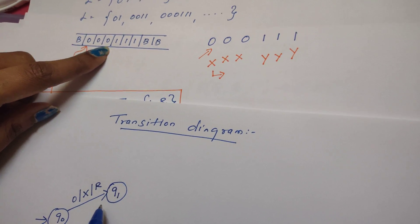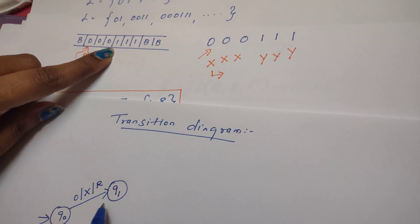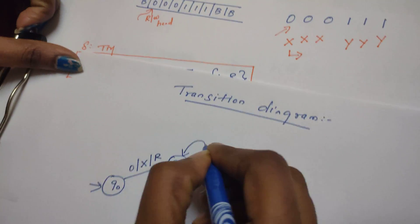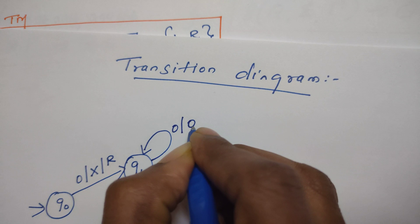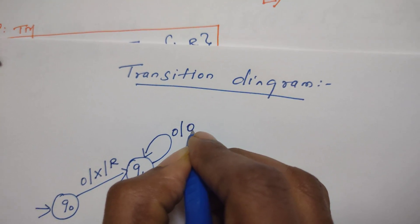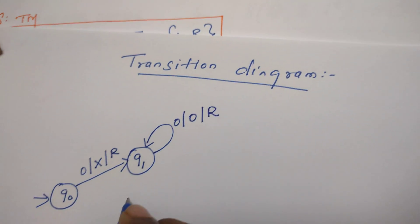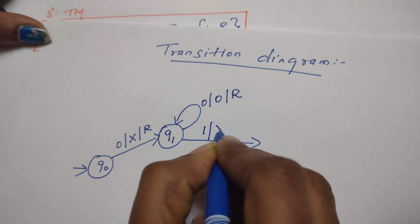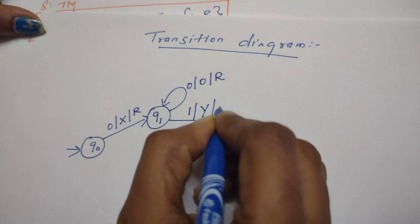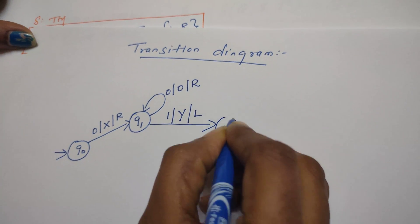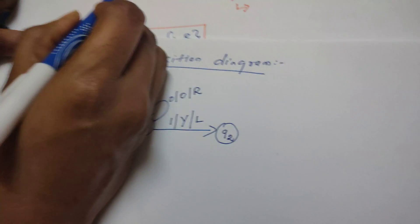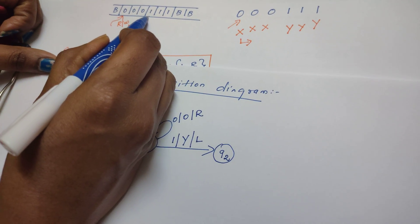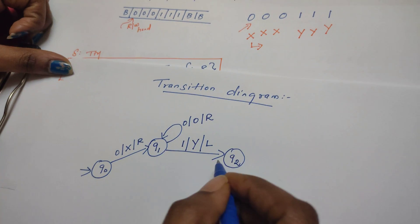From state q1, the machine continues reading zeros moving right toward the first one. Whenever it reads zeros, it does not modify them — the read/write head just continues moving right. After reading all the zeros, the Turing machine encounters a one. When it reads that one, it is replaced by y, the head direction changes to left, and the state changes to q2.